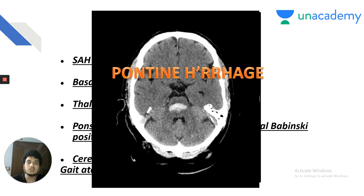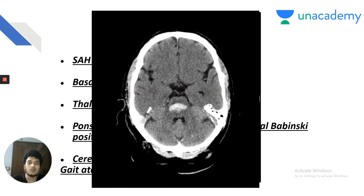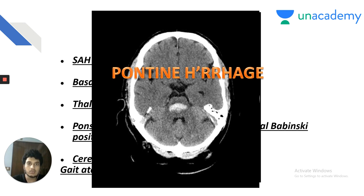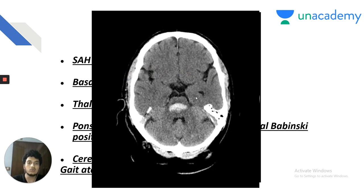Pontine hemorrhage classically causes quadriplegia and bilateral Babinski positive. Reviewing the CT images: thalamic hemorrhage produces hemi-anesthesia; putamen bleed is caused by hypertension and is larger in size with compression of adjacent ventricles; reticular formation and ocular pathways are usually normal in pontine hemorrhage and the patient can communicate in Morse code.